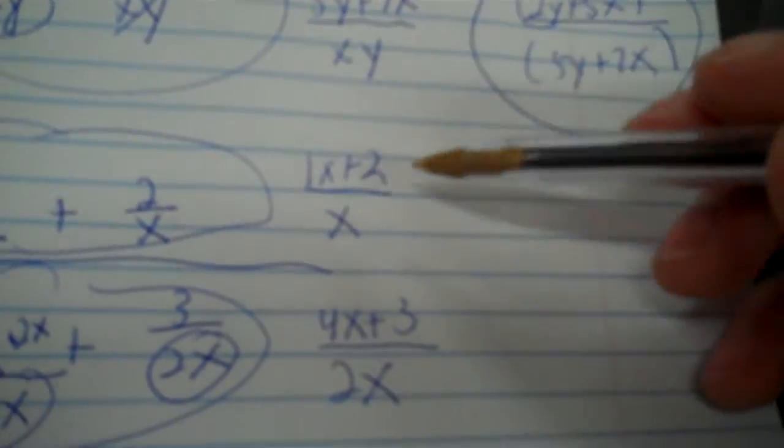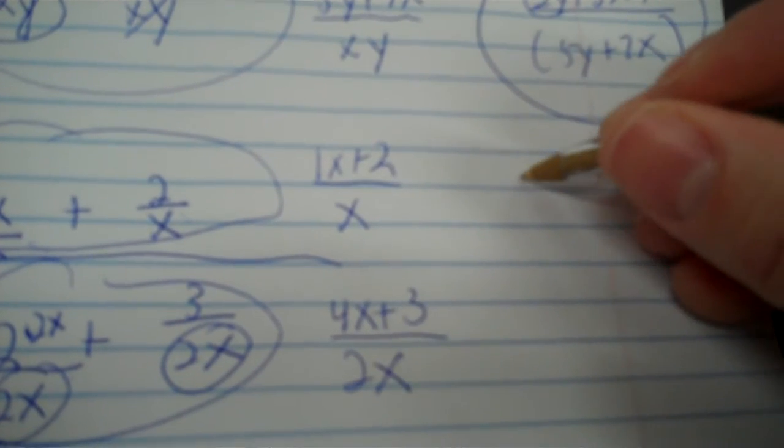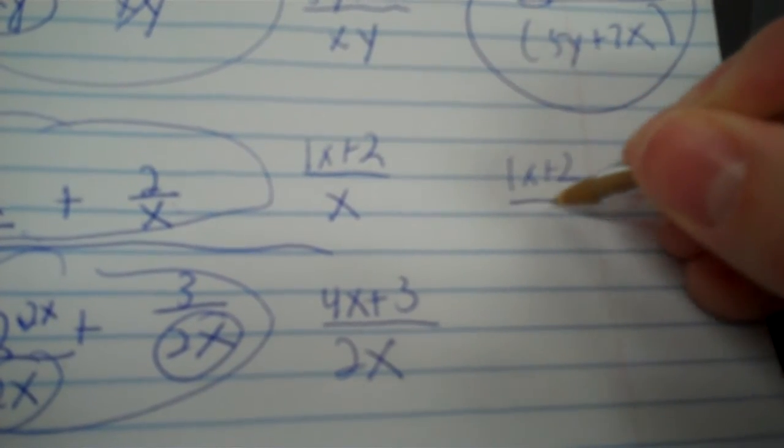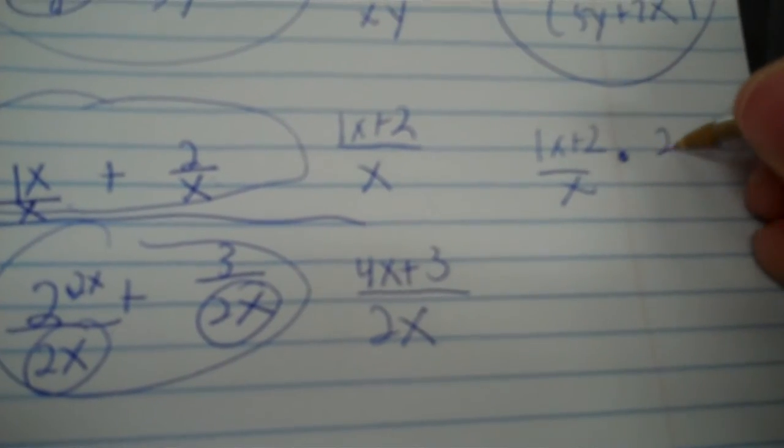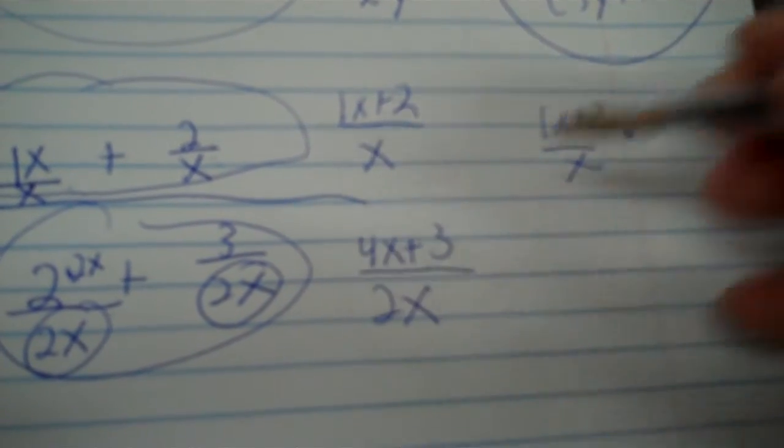Okay, now I just need to reciprocate and multiply. So, the top is one x plus two over x times the bottom. I flip it to two x. Remember, that bottom one needs to be reciprocated. Two x on top. Four x plus three.